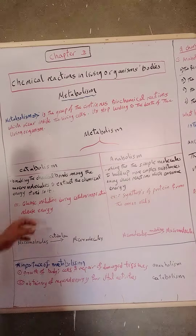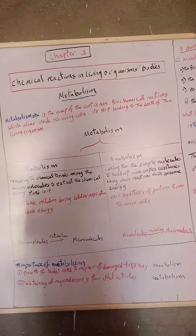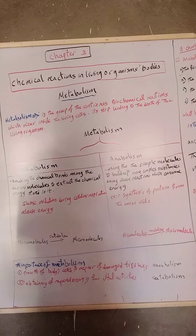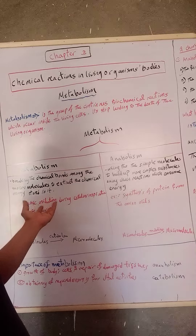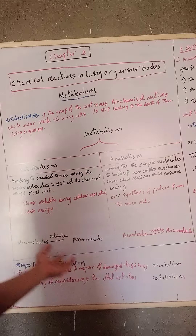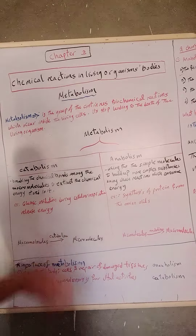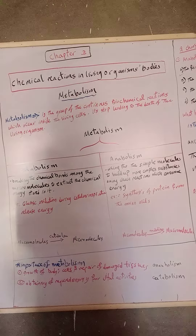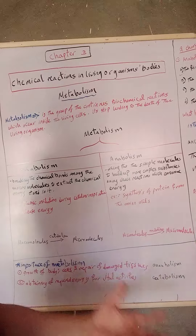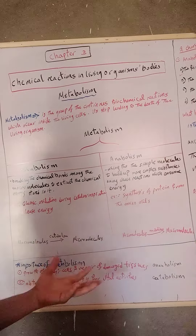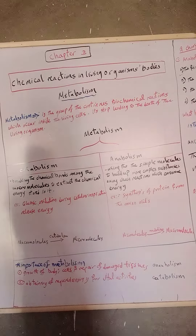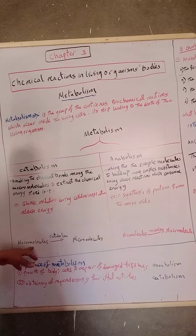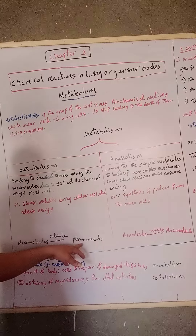For example, we take glucose. When we eat and the food undergoes digestion, the glucose undergoes cellular respiration — it combines with oxygen, which the blood carries, and energy is extracted. This energy is used by the living organism. In catabolism, macromolecules are broken down into micromolecules.